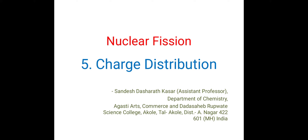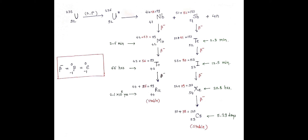In today's lecture, we are going to discuss what is charge distribution. In Part 3, we have seen these two series. When uranium-92 is bombarded with a neutron, it gets excited. After excitation, it undergoes fission to form primary fission fragments — niobium and antimony. These are the primary fission fragments and they are unstable. Therefore, they undergo successive beta-emission to give us stable nuclides. We have seen this in Part 3.